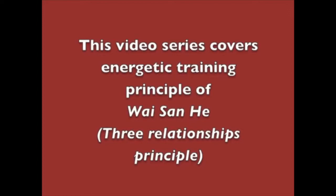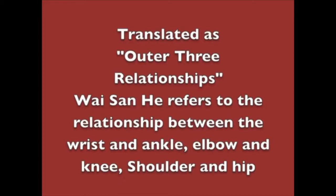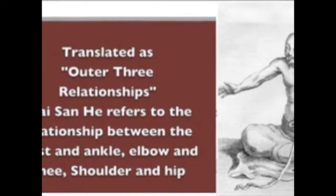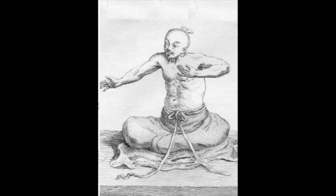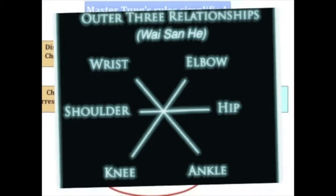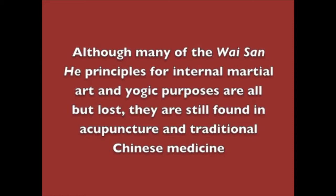This video series covers the energetic turning principles of the Weiss and Ha Three Relationships Principle, translated as the outer three relationships. Weiss and Ha refers to the relationship between the wrist and ankle, elbow and knee, and shoulder and hip. These principles of body relationship, commonly used in Chinese medicine and acupuncture today, trace their roots back to ancient Chinese yogas and the principle of holographic correspondence. Although many of the Weiss and Ha principles for internal martial arts and yogic purposes are all but lost, they are still found in acupuncture and traditional Chinese medicine.